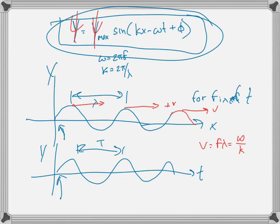Notice that we've got two different velocities. We've got the wave velocity, which is the propagation in the x direction, and that's f·λ, which is also equal to ω over k.